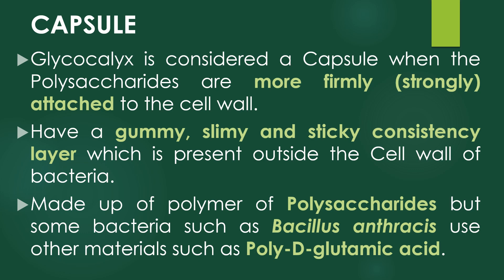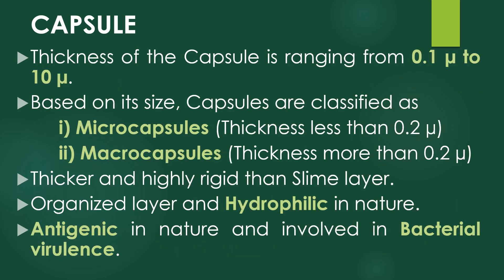Capsules have a gummy, slimy, and sticky consistency layer present outside the cell wall of bacteria. In general, bacterial capsules are made up of polymers of polysaccharides, but some bacteria such as Bacillus anthracis use other materials such as poly-D-glutamic acid for the synthesis of capsules. The thickness of the capsule in bacteria ranges from 0.1 micron to 10 micron.